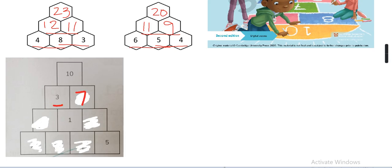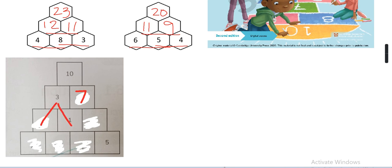Now these two numbers are the base for number 3. What will I add to number 1 to make number 3? I will add number 2 — 2 plus 1 is number 3. You have to go this way — let me explain it the other way as well. It is only this triangle — you have to find the triangle in the walls.